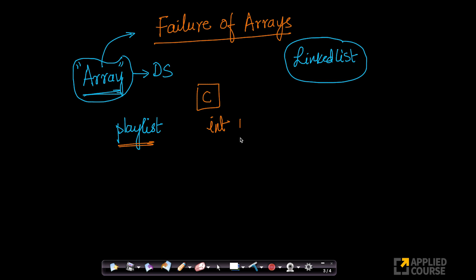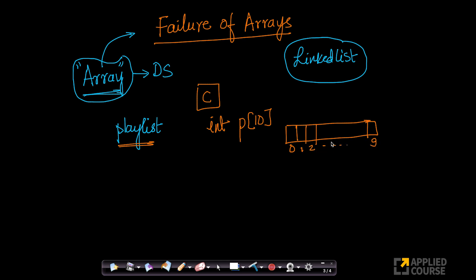If I have these 10 videos in my playlist P, P is my playlist and I have basically an array of size 10. In C, you have locations 0, 1, 2, and so forth up to 9 — the 10 locations. In each of these locations, since this is of int type, I could store the ID of each video. Let us assume every video here has an integer ID.